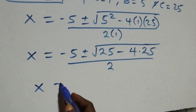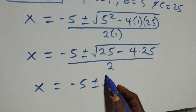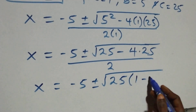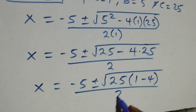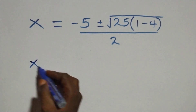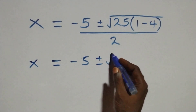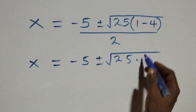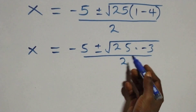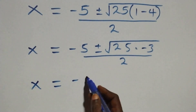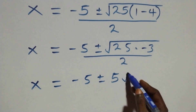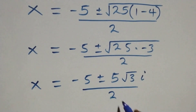Which is the same as x equals to minus 5, plus or minus square root of 25, where 25 is common, into brackets: 1 minus 4. That gives us x equals to minus 5, plus or minus square root of 25 times 1 minus 4, that's minus 3, over 2. Breaking into two roots: root of 25 is 5, so x equals to minus 5, plus or minus 5 root 3 i, over 2. Also we have two complex solutions here.